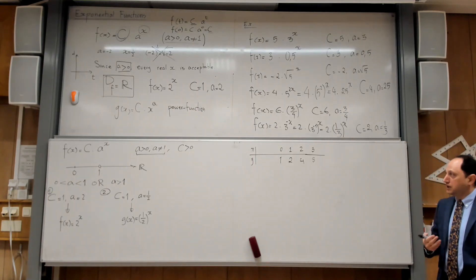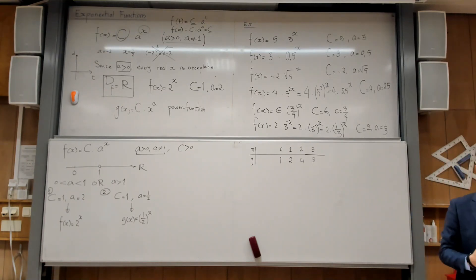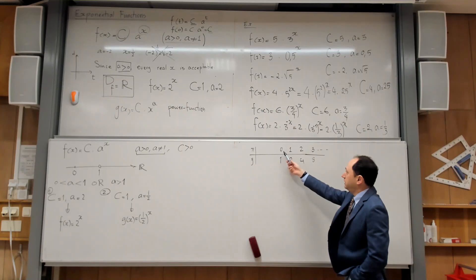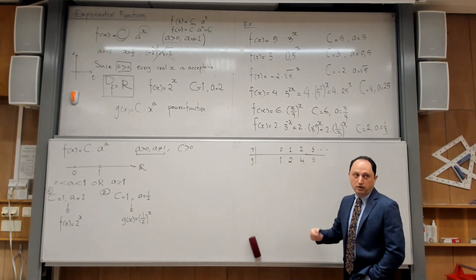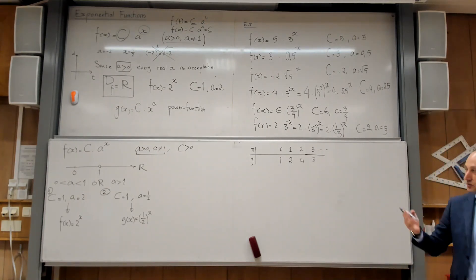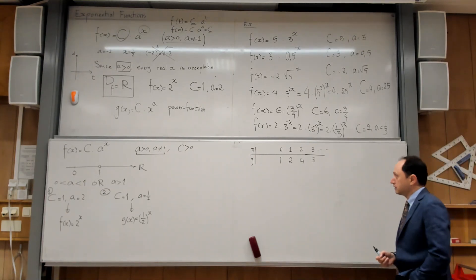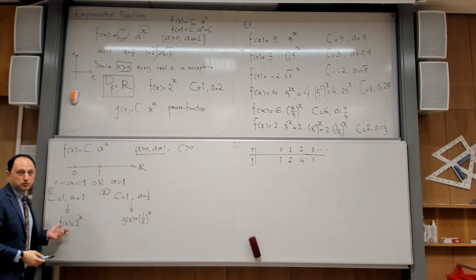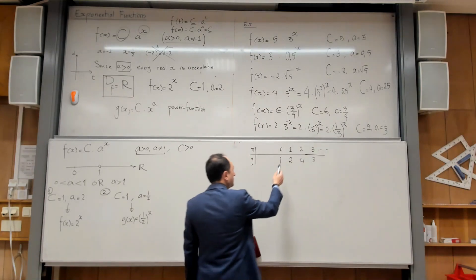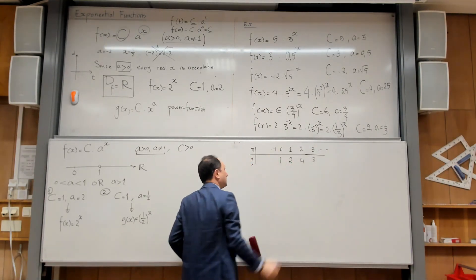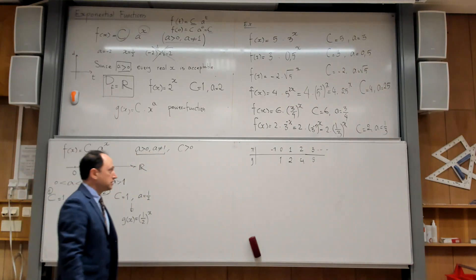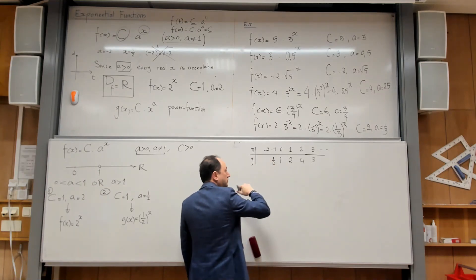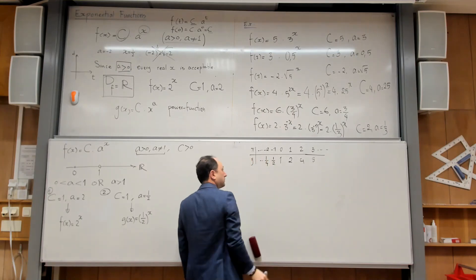We can also consider negative values, since the domain of exponential functions is all real numbers. If x is minus 1, 2 to the power minus 1 is 1/2. If x is minus 2, it becomes 1/4. We can also use GeoGebra to get a better graph. The table gives us the key points to sketch the graph.